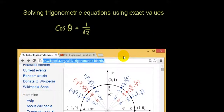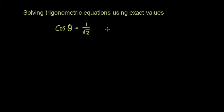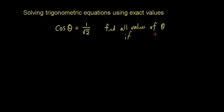Let's look at this equation. We want to find what θ is if cosθ equals 1 over the square root of 2. We'll define a domain for θ: find all values of θ between 0 and 4π.